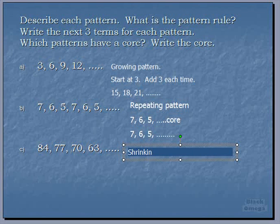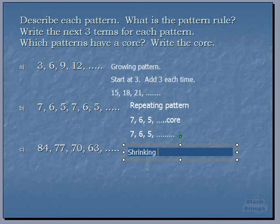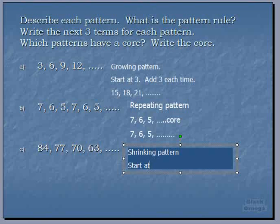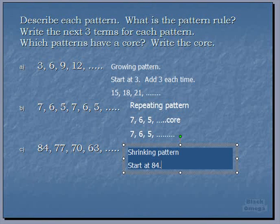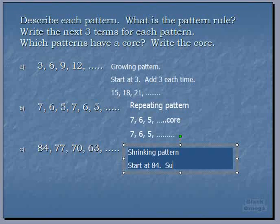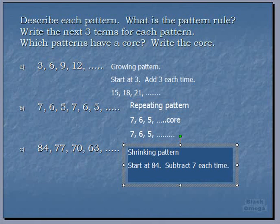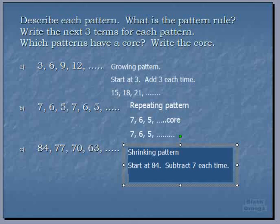That's right. It is a shrinking pattern. So we have a shrinking pattern. What is our rule? We start at the number 84. So what happens to get to 77? That happens when it gets to 70 and happens again at 63. 84 to 77, that's subtract. We know it's shrinking so it's subtract 7 each time. You start at 84, subtract 7 each time. That's what we call our pattern rule.